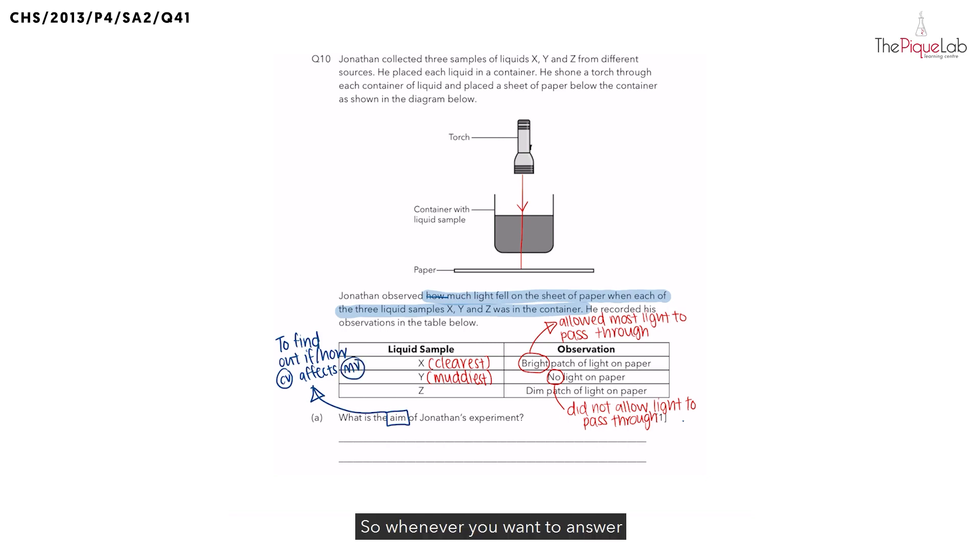So whenever you want to answer the aim of the experiment question, this is the template to use and you need to find out what is the change and measured variable in the experiment. So what is the change variable in the experiment? It is actually the type of liquid. So we have three different types of liquid, X, Y, and Z.